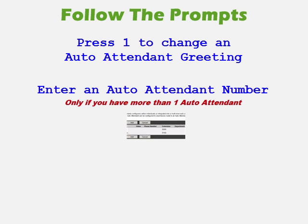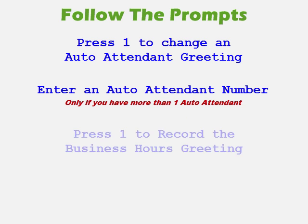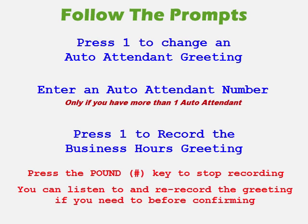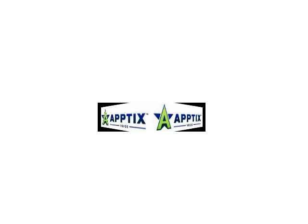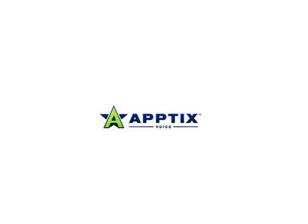To change an auto attendant greeting, press 1. If you have multiple auto attendants you'll be prompted to enter the auto attendant extension number. You'll then hear: 'To record a new business hours greeting, press 1.' The business hours and after hours greetings are recorded the same way. After pressing 1, you'll hear: 'Please start recording after the tone, press the pound key to end recording.' The greeting can be anything you want — just make sure it matches your options so callers know what to press. Once finished you'll hear: 'Thank you, your greeting has been recorded.' Your auto attendant is now set up. Dial the extension or phone number to test it, and call support if you need help. Thanks for choosing Aptix Voice.